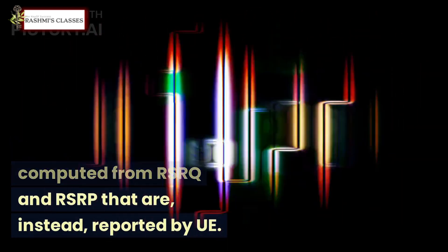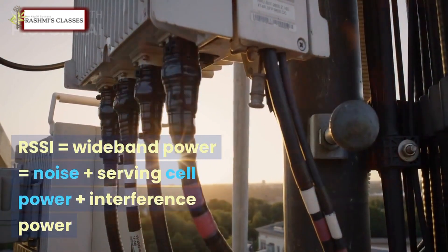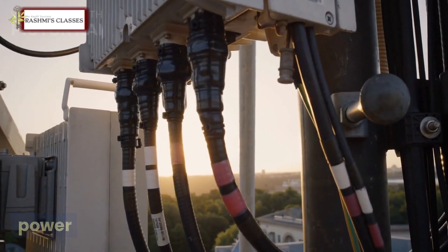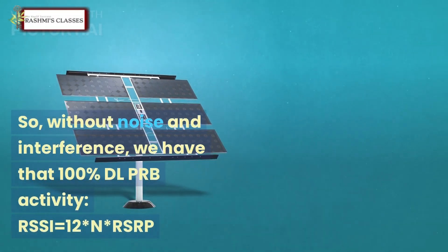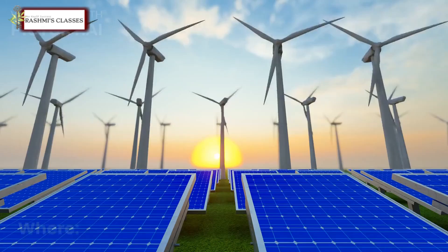RSSI = wideband power = noise + serving cell power + interference power. So without noise and interference, at 100% DL PRB activity: RSSI = 12*N*RSRP.